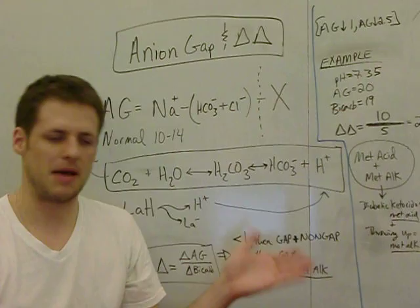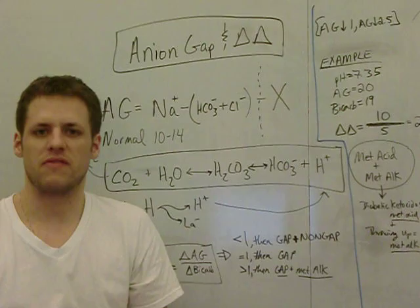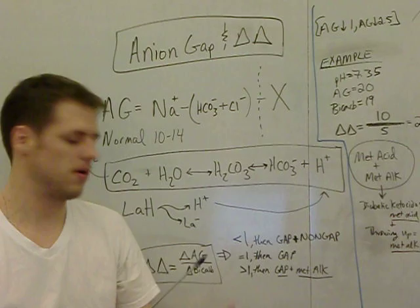Delta bicarb, well, normal bicarb is about 24. Again, you might see 22 to 26, 22 to 25. Think of it as 24.